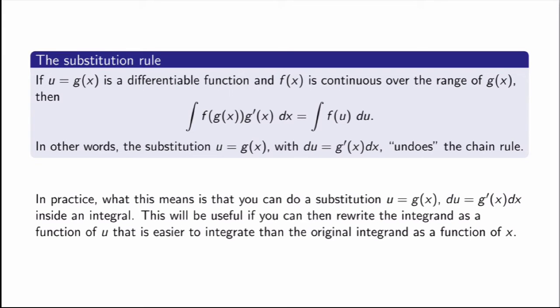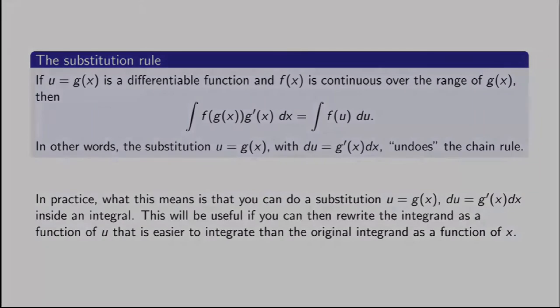So the formal substitution rule states: if you're given an integral in x, you can do a substitution u equals g of x and transform du as g prime of x dx. You're always allowed to do that, but it will be useful only if you can rewrite the integrand as a function of u and that new function is easier to integrate than the original integrand in x.